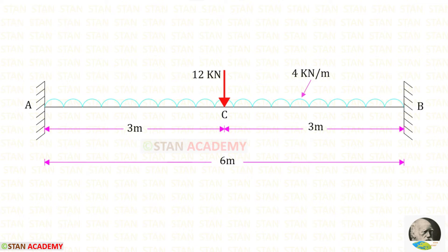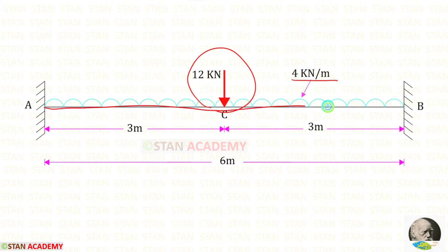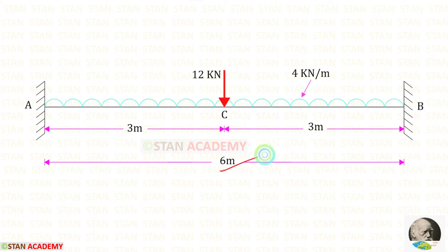In this beam we have two loads: one point load of 12 kilonewton at the center, and a uniformly distributed load of 4 kilonewton per meter acting for the whole span. The length of the beam is 6 meters.